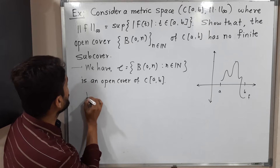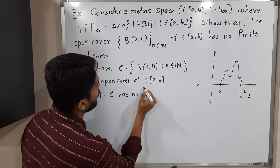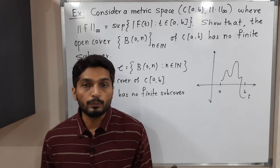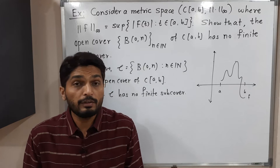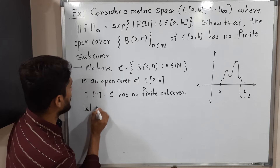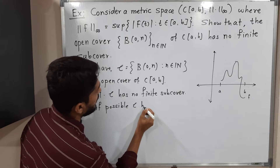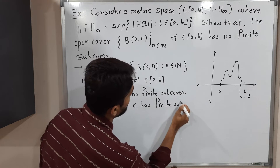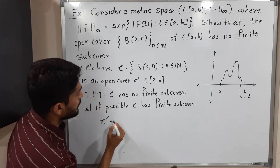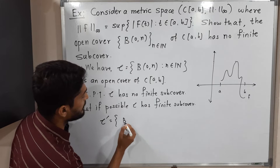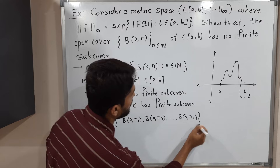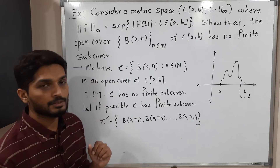To prove that script C has no finite sub-cover, we use contradiction. In mathematics, to prove something does not exist, we assume it does. So let us assume — if possible — that script C has a finite sub-cover, which we call script C-dash, containing finitely many balls: B(0, N₁), B(0, N₂), ..., B(0, Nₖ).